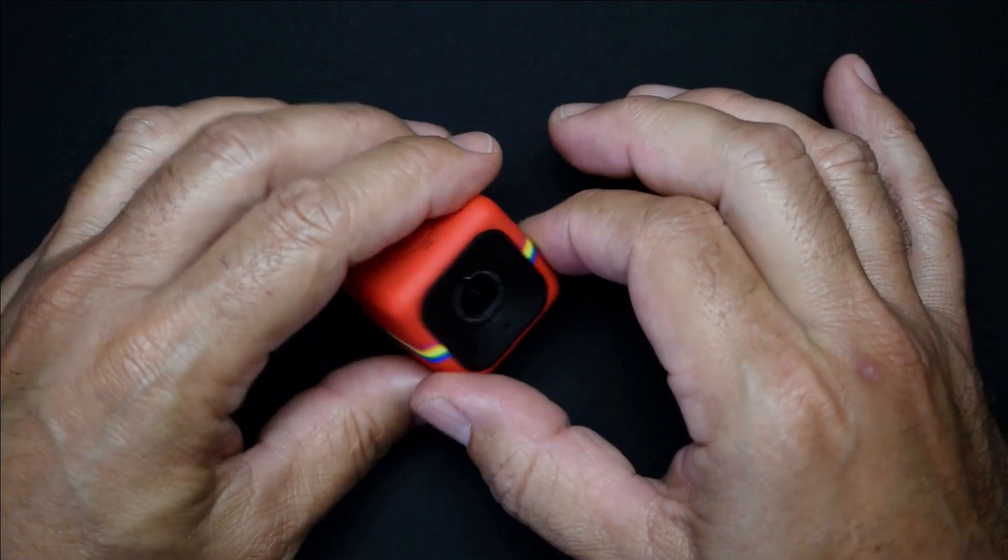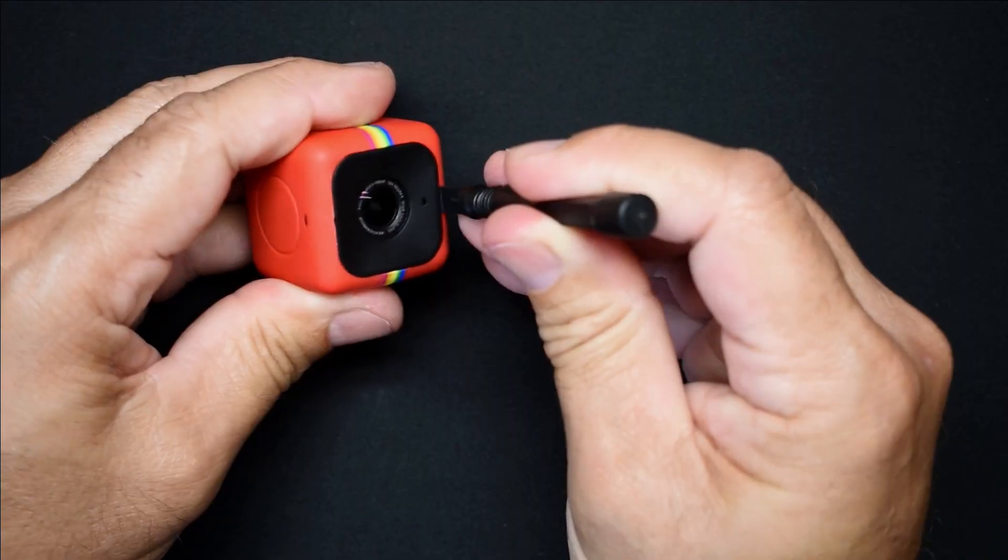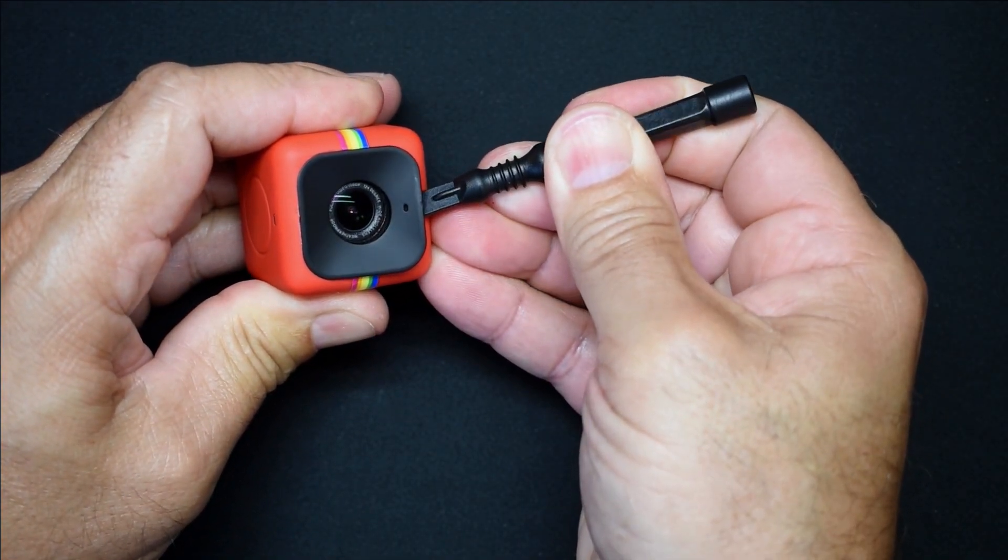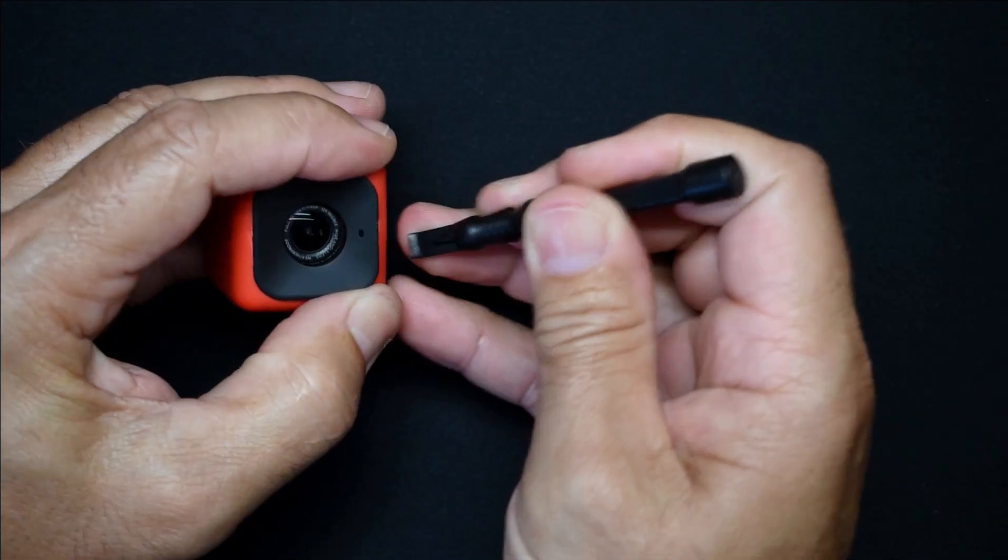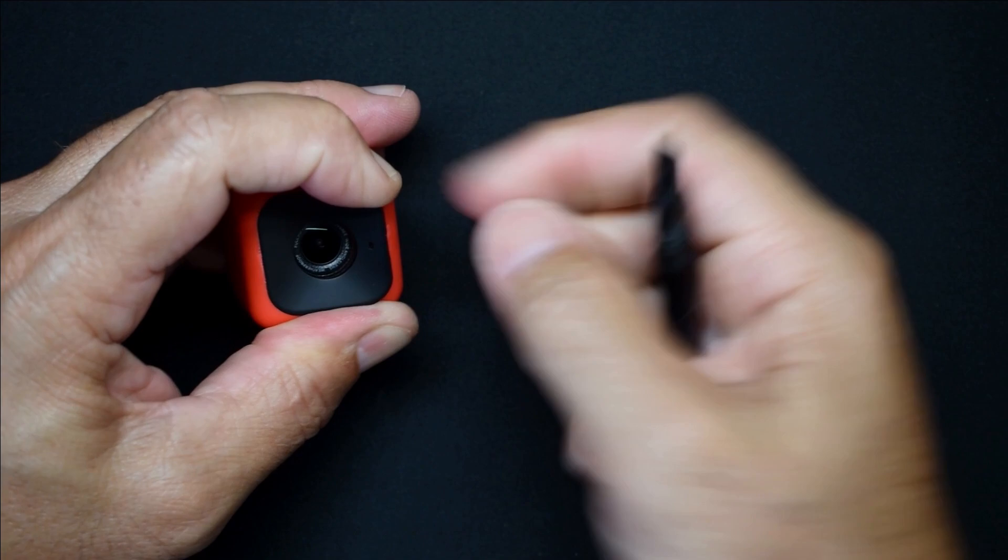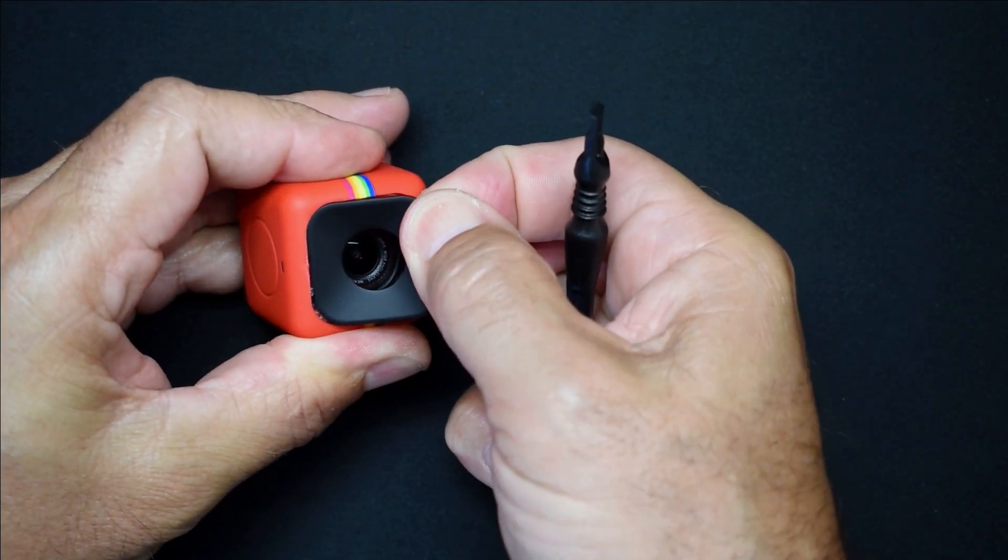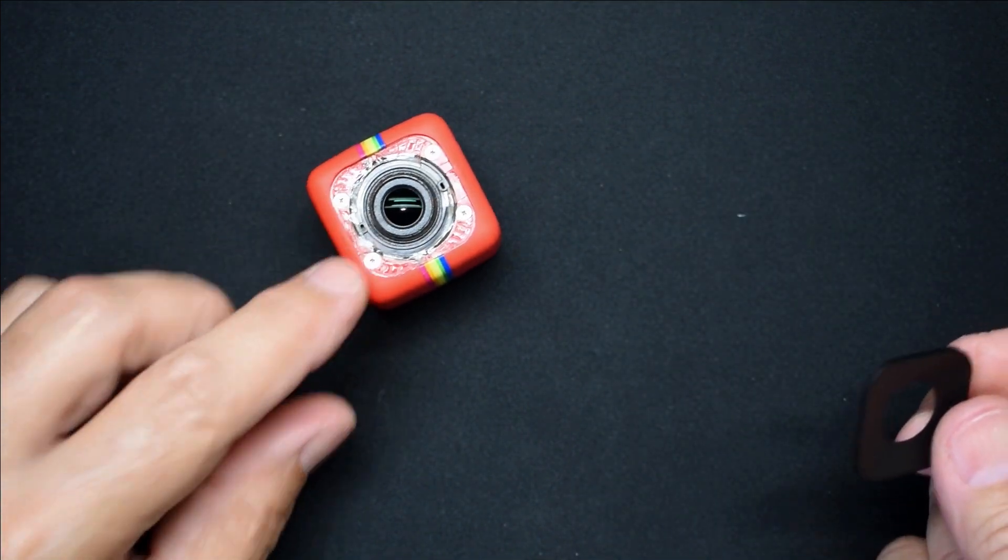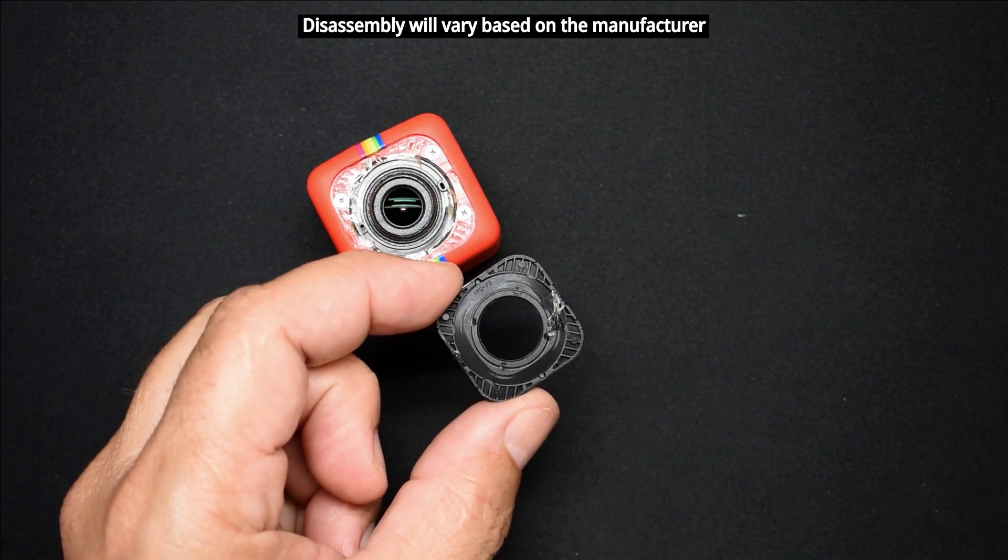So in order to open this, the first thing we have to do is pull off this front cover. Take this tool and just get under it. It's kind of sticky under there and you can see there's four screws. And here is the rear side of that face plate.